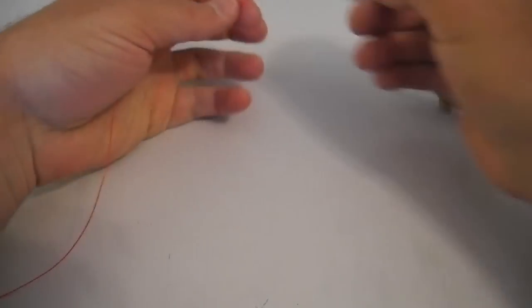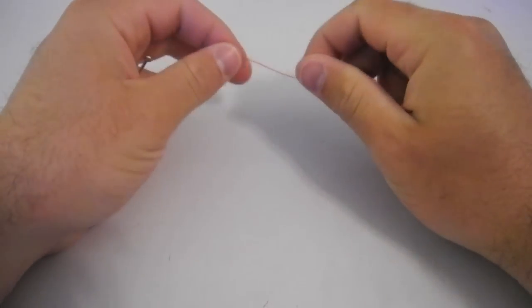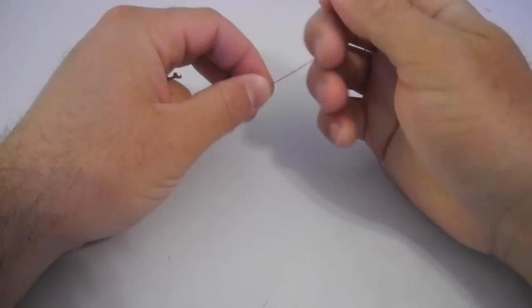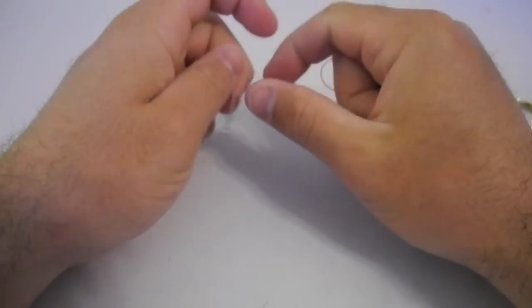Now what I'm going to be tying for you is the Palomar knot. This is a great knot for larger flies, such as bonefish flies, so I use it a lot for streamers. What it does is it doubles up the line on the eye of the hook.